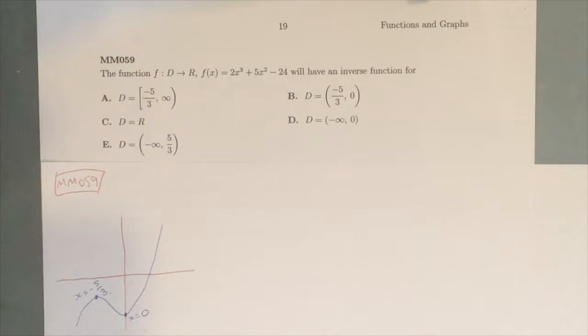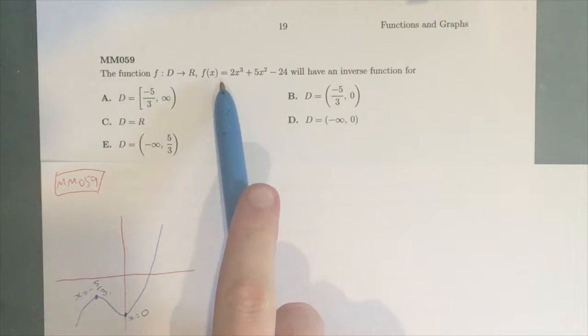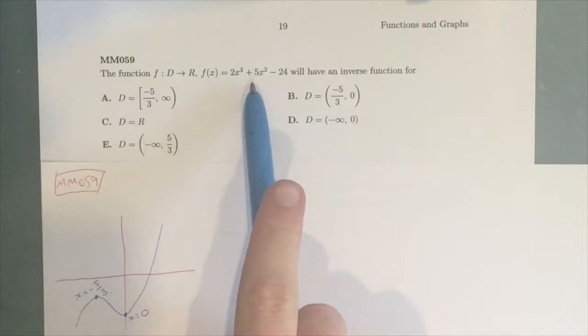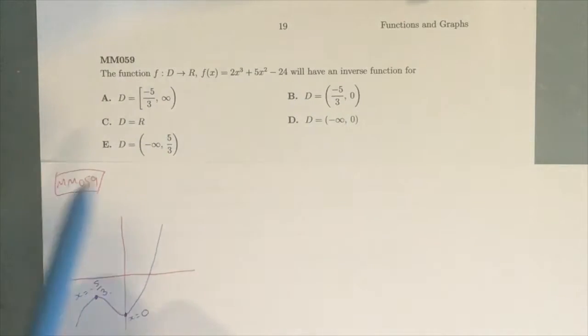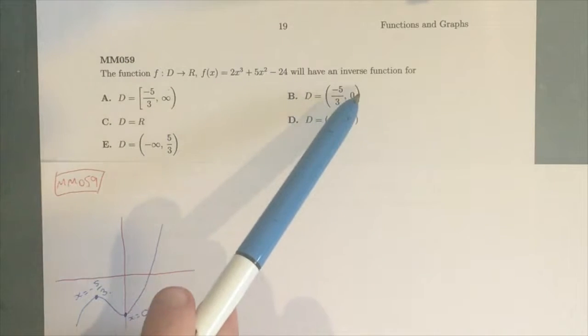Hey guys, this is question MM059 for the Maths Methods Sharpen Study Guide. We've got a function f: D → R, f(x) = 2x³ + 5x² - 24. We want to find the domain for which that function will have an inverse.